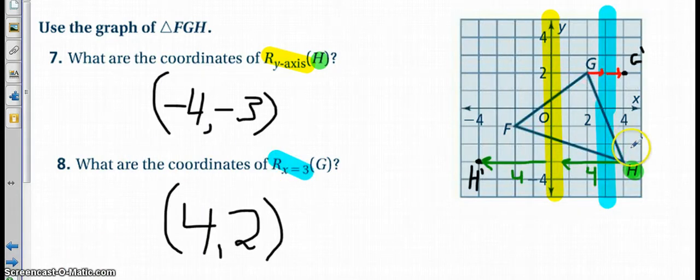And when we try to reflect point G across the line of X equal to three, remember that X creates vertical lines. So we create that vertical line at X equal to three, we see that G is one away. So then I go one the opposite direction, find my G prime is at four, two, that's how I get my result.